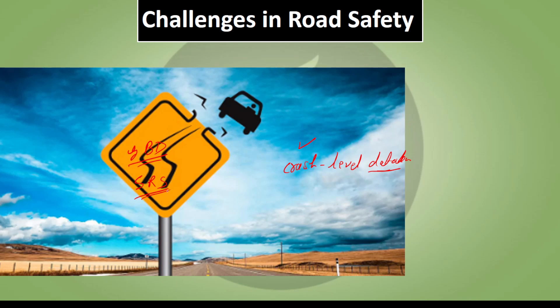Key variables are missing. The Global Burden of Disease Study and civil registration data suggest that records are often inaccurate. Despite simple safety measures like helmets which reduce fatalities, many two-wheeler riders still do not wear them, even when traffic police are present.